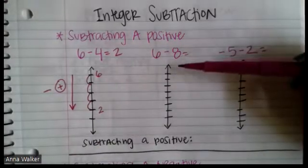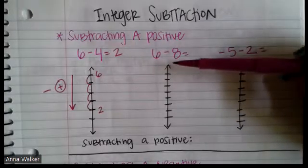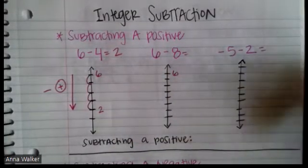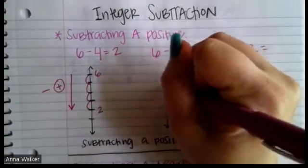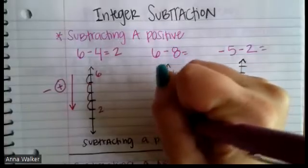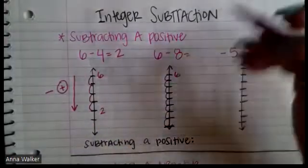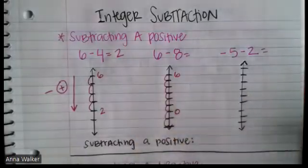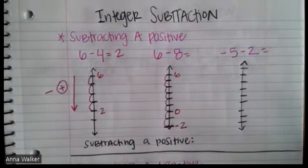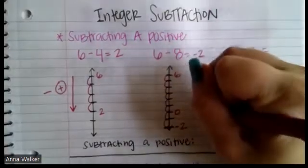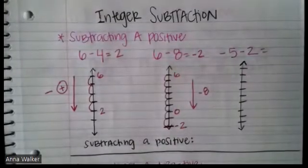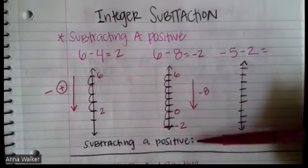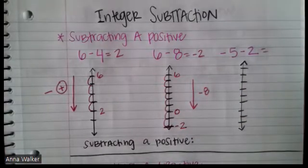Now instead of subtracting a number smaller than the first, we subtract a bigger one: six minus eight. We're still subtracting a positive, so we go down the number line eight spots. Going down from six — one, two, three, four, five, six, seven, eight — we pass zero and end up at negative two. We had to subtract six to reach zero, then go two more spots, so six minus eight equals negative two.